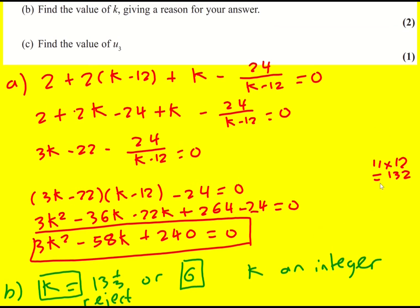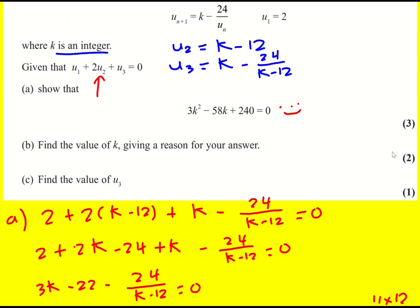Finally, find the value of u3. We've just shown that k is 6. So u3 is going to be 6 minus 24 over 6 minus 12. That's minus 2. So it's 6 minus 24 over... Sorry, did I say minus 2? I meant minus 6. So 6 plus 4, which is going to give us an answer of 10. Great.